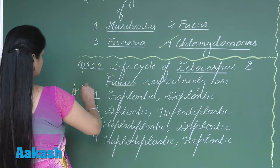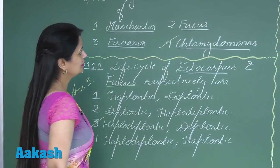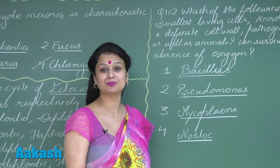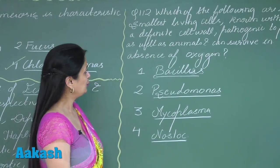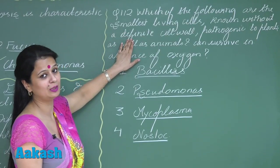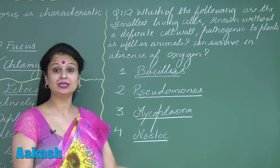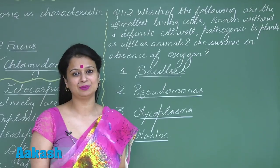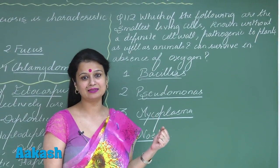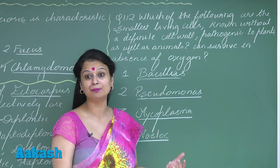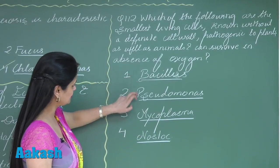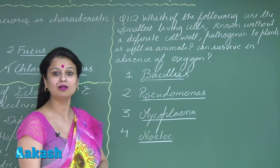Question 112 is a very easy NCERT-based question. We have to look for the smallest living cells which are without a cell wall, are pathogenic to both plants and animals, and are facultative anaerobic. These features are well suited for Mycoplasma. Bacillus, Pseudomonas, and Nostoc all possess a cell wall.